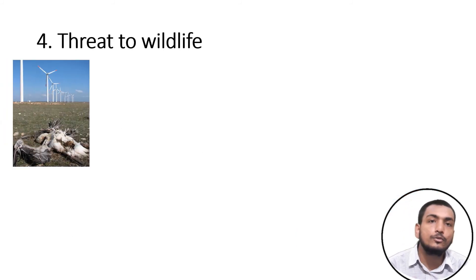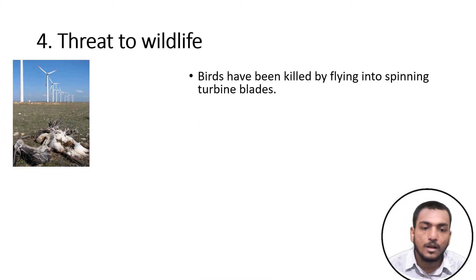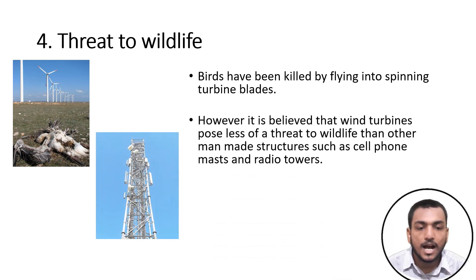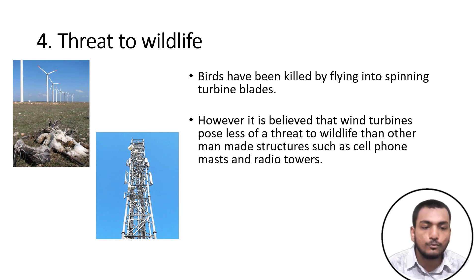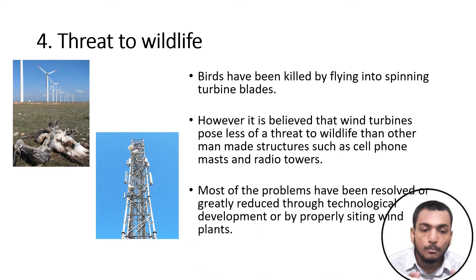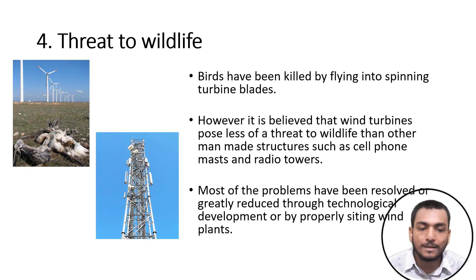Disadvantage four: threat to wildlife. Birds have been killed by flying into the spinning turbine blades. However, it is believed that wind turbines pose less of a threat to wildlife than other man-made structures such as cell phone masts and radio towers. Most of the problems have been resolved or greatly reduced through technological development or by properly siting wind plants.